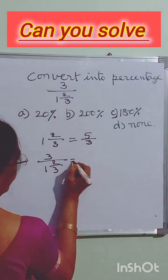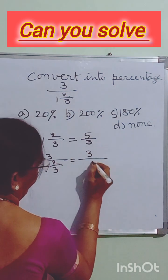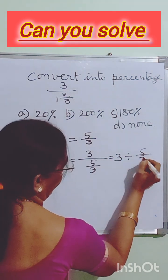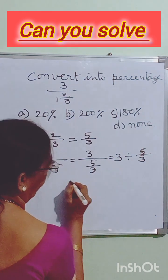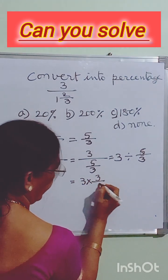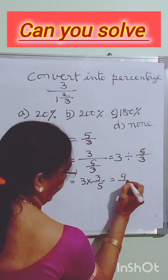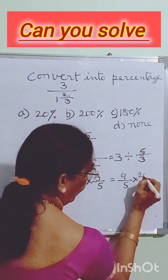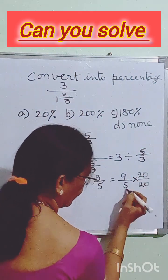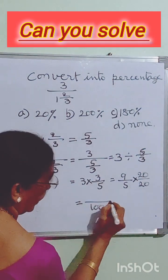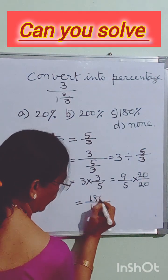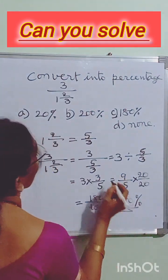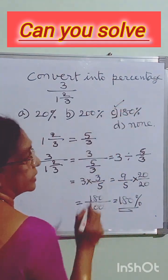So 3 divided by 5/3 is equal to 3 multiplied by 3/5, that is 9/5. We will multiply both the numerator and denominator by 20, because 5 times 20 is 100. So 9 times 20 is 180, giving us 180/100, that is 180%. So option C is correct.